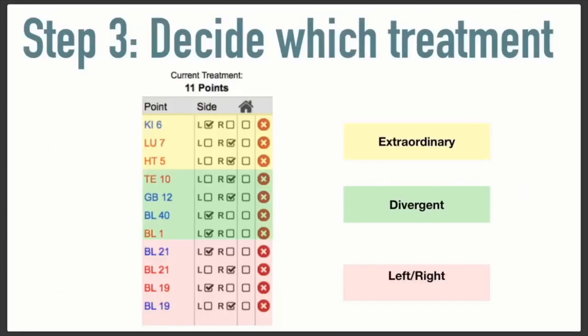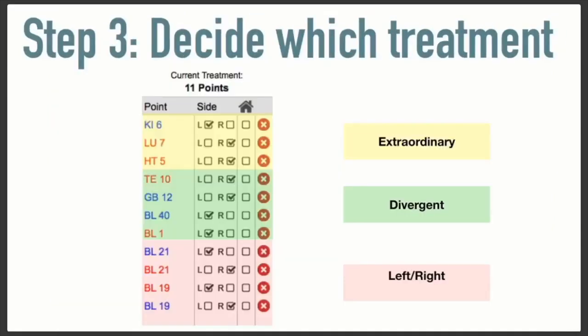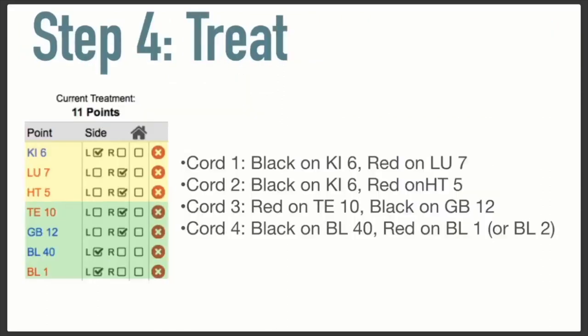If you go and look at the extraordinary treatment, Lung 7 and Heart 5 — which are very deficient — we'll go back and look: notice how the lung and heart are so deficient. They're going to pull energy from that kidney channel. So in this treatment strategy, I'm going to use extraordinary and divergent. I'm going to pull the back shu points off of my treatment plan, and now we come to a total of seven treatment points.